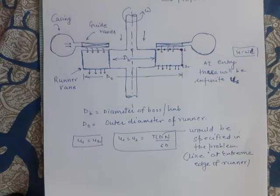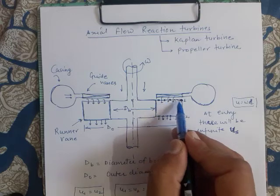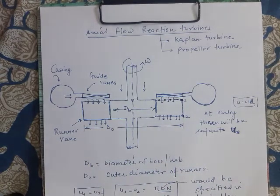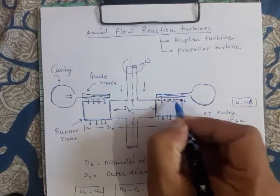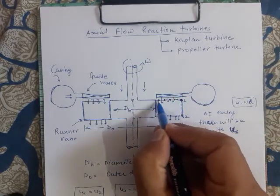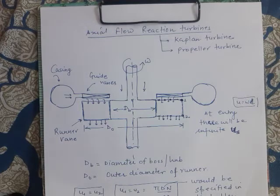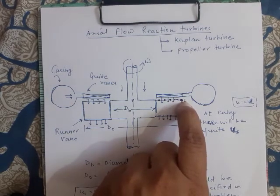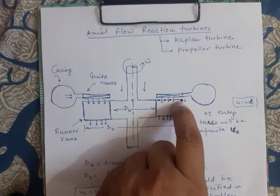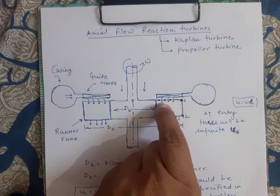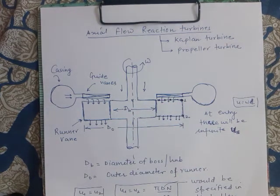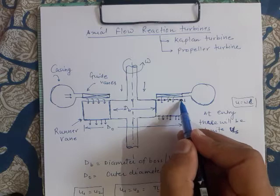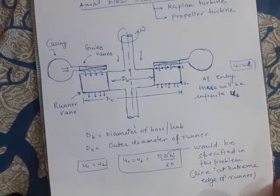The blade is curved such that at each point there is a different blade angle at inlet. So which blade angle do we take? Again, it is specified in the problem. For example, if the problem states 'at the extreme edge of the runner,' we take the blade angle at that point. Different points have different blade angles and different blade speeds, and the specific point will be identified in each problem.